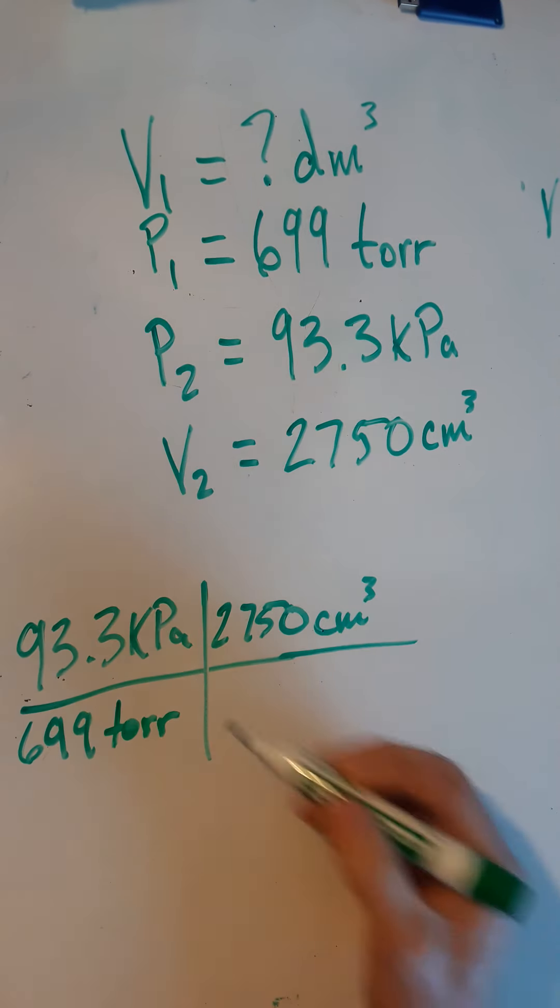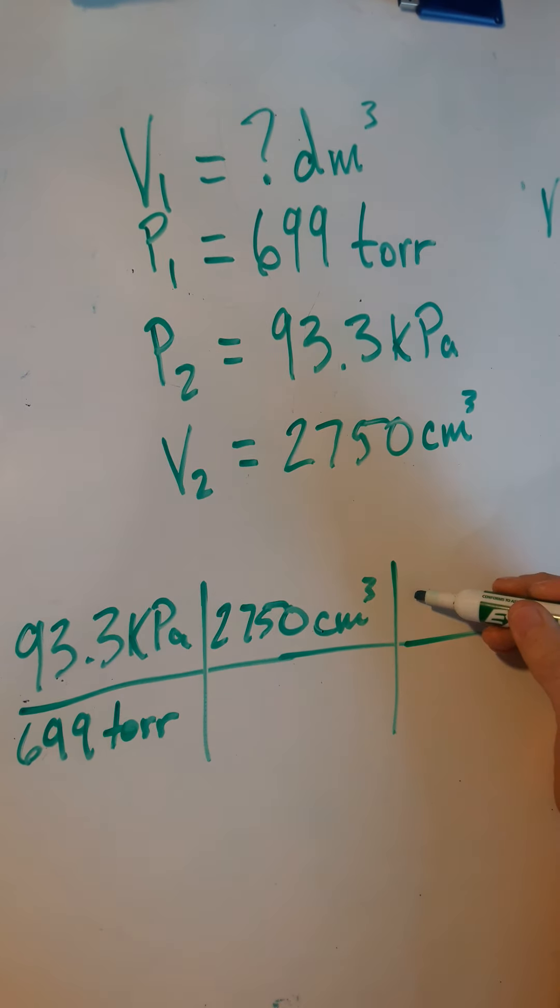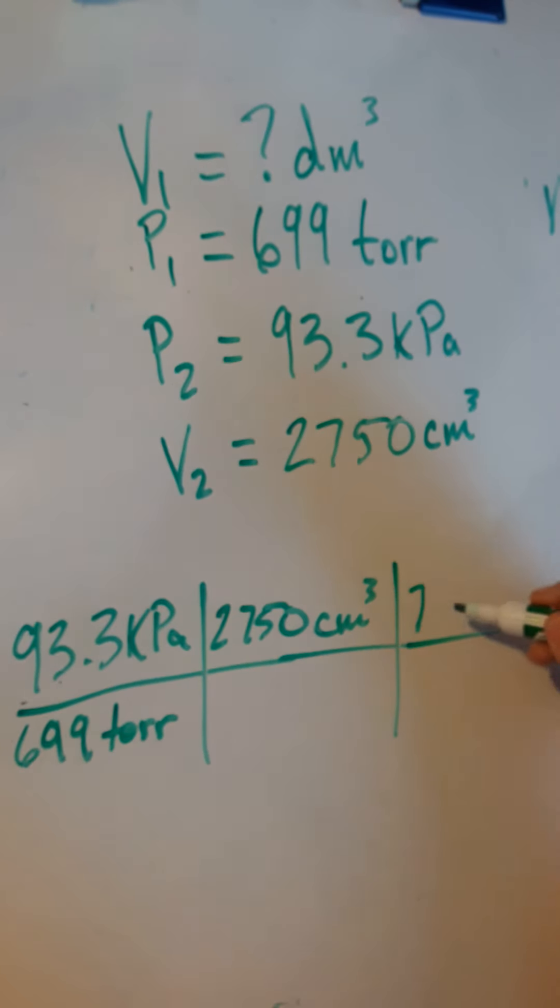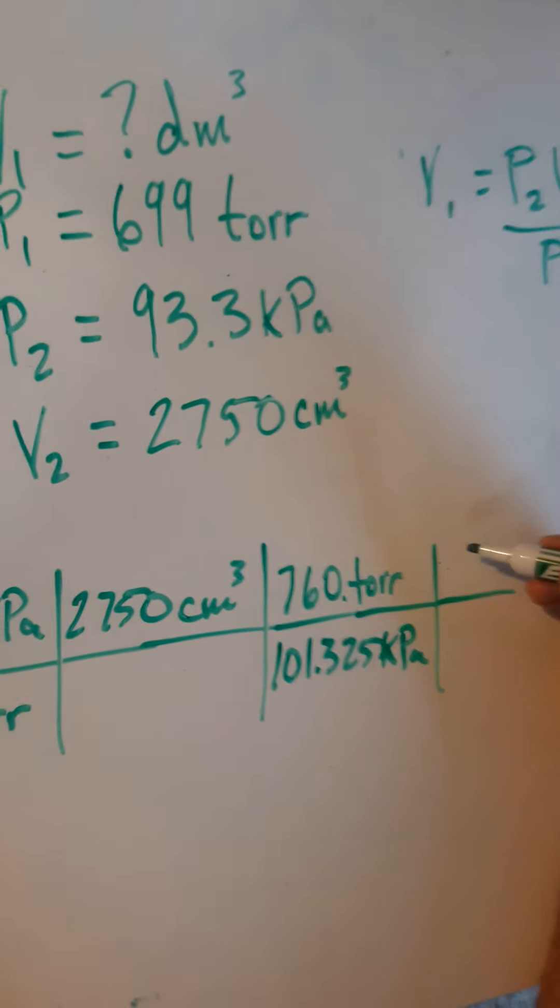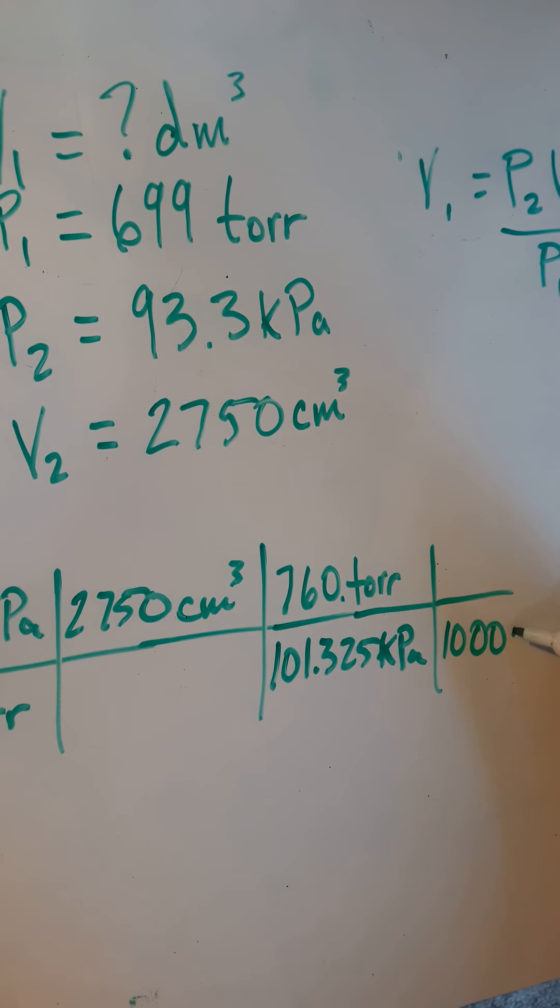And so different units, that would give me the math, but since these are different units, I just put my standards. Both of these are going to cancel. So I'm just going to put a 760 torr here, three significant digits divided by 101.325 kilopascals. And then for my volume, because we have a thousand centimeters cubed is equal to one decimeter cubed, we can just plug this all in.